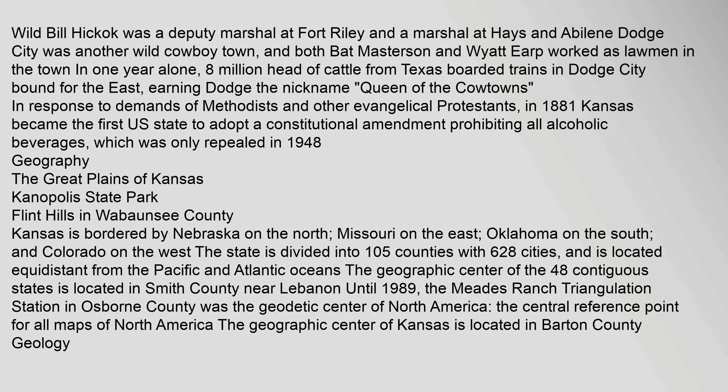Kansas is bordered by Nebraska on the north, Missouri on the east, Oklahoma on the south, and Colorado on the west. The state is divided into 105 counties with 628 cities, and is located equidistant from the Pacific and Atlantic Oceans. The geographic center of the 48 contiguous states is located in Smith County near Lebanon. Until 1989, the Meads Ranch Triangulation Station in Osborne County was the geodetic center of North America, the central reference point for all maps of North America. The geographic center of Kansas is located in Barton County.